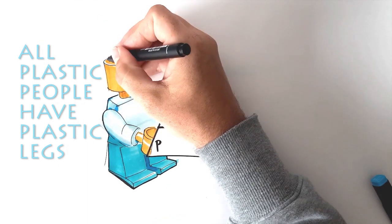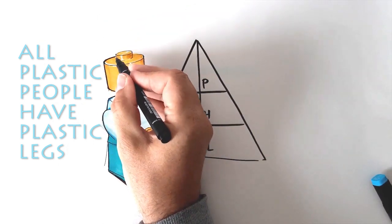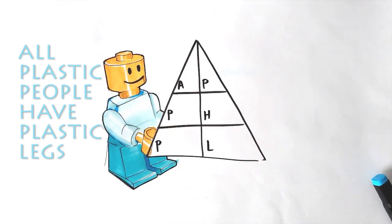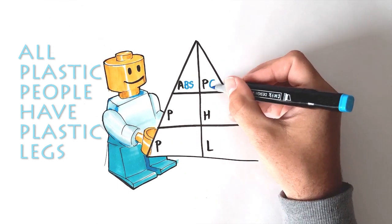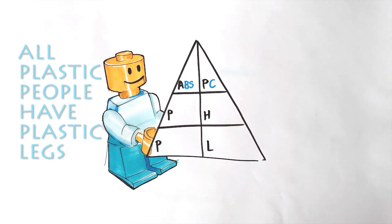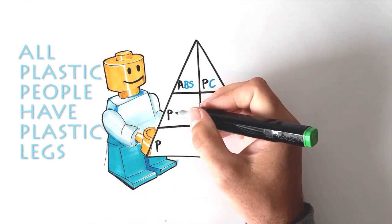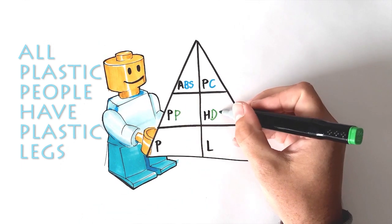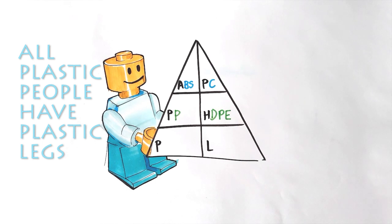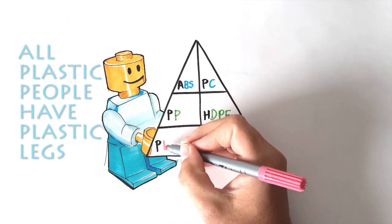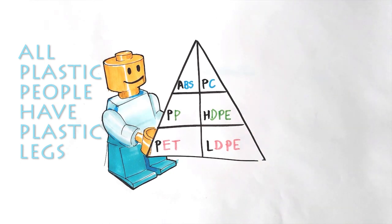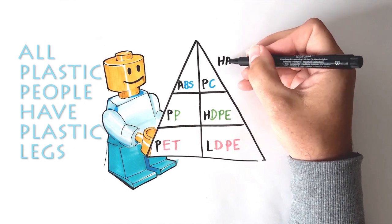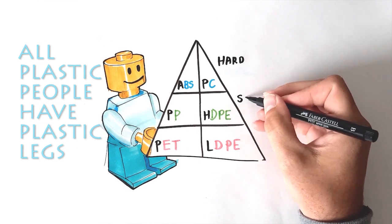All plastic people have plastic legs gives us the first letter for each of the plastics we need to remember. It also puts them in an order for us. So, when you think of plastics, and you're struggling to remember which one's which, I want you to remember this Lego man and the fact that he's helping us out. At the top end, we have ABS and PC, which stands for polycarbonate. In the middle plastics, PP and HDPE. And finally, PET and LDPE. At the top we have our hard plastics. In the middle, our soft plastics. And at the bottom, our hygienic plastics.